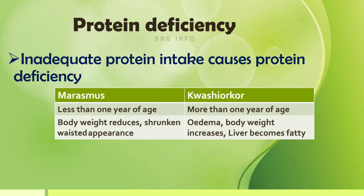If you do not have proper intake of protein, it leads to protein deficiency. Protein deficiency can be mainly categorized into two types: marasmus and kwashiorkor. Both are caused by deficiency of protein.